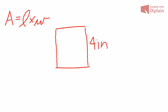If this side is four inches, that means that all the other three sides are also four inches. So using our area formula, area equals length times width, I would say area equals four times four because all of those sides are equal.